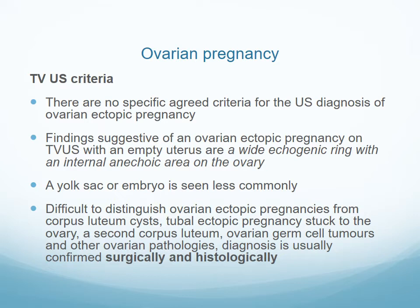For ovarian pregnancy on ultrasound, there are no specific criteria that are agreed upon. We can see a wide echogenic ring with an internal anechoic area on the ovary. However, this is difficult to distinguish from a corpus luteum cyst, a tubal ectopic pregnancy stuck on the ovary, two corpus lutea, or other ovarian pathologies. Ultimately, the diagnosis is confirmed surgically and histologically.